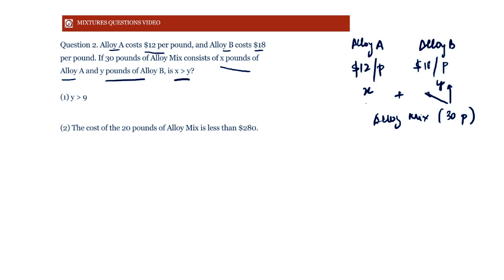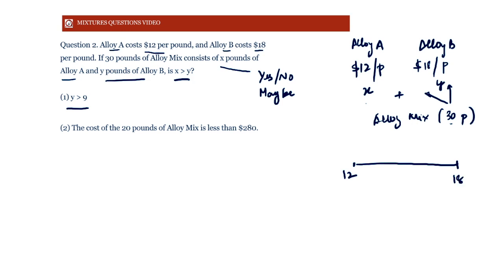We are asked: is x greater than y? Since x + y = 30, we need to determine whether x or y is larger, or if they're equal. On a scale between 12 and 18, the average lies somewhere in that range. Statement 1 tells us y is greater than 9. For example, if y = 10 then x = 20, placing the average closer to 12.